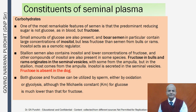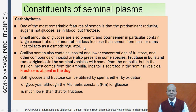Seminal plasma is comprised of carbohydrates. One remarkable feature of semen is that the predominant reducing sugar is fructose rather than glucose as in blood. Small amounts of glucose are also present. Boar semen contains large concentrations of inositol but less fructose than bull or ram semen. Inositol acts as an osmotic regulator in bull seminal plasma. Stallion semen also contains inositol and lower concentrations of fructose.